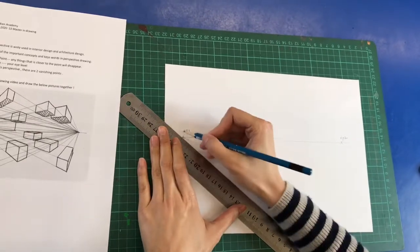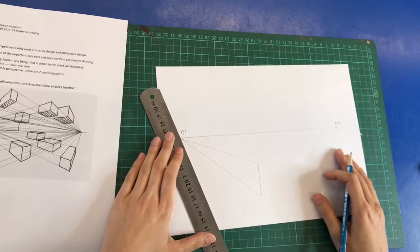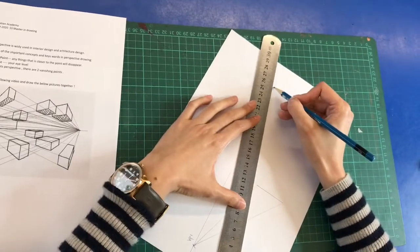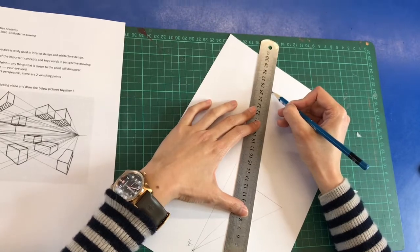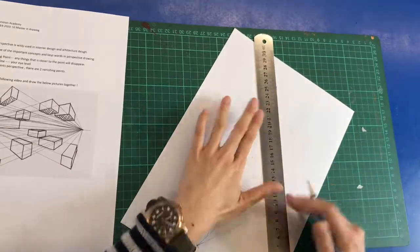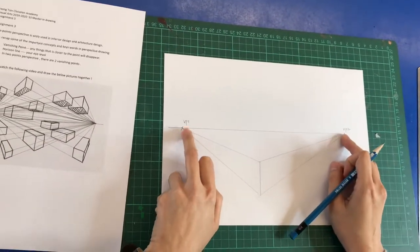So and then afterward, then you can try to link up the diagonal line. So remember, the slogan is all the diagonal lines should go back to the VP. So you will see that now I'm trying to link up all the diagonal lines to two different VPs.